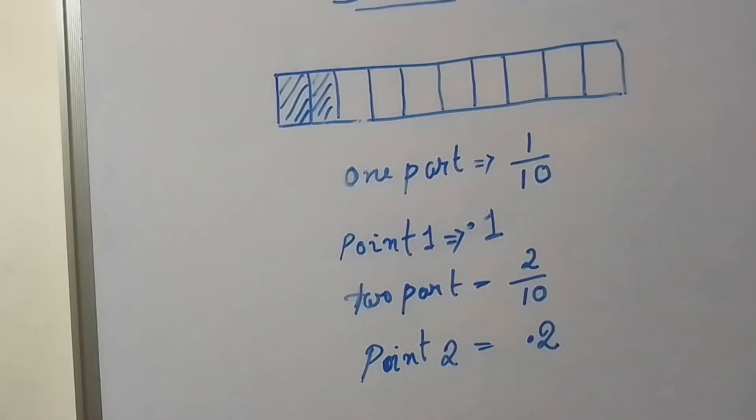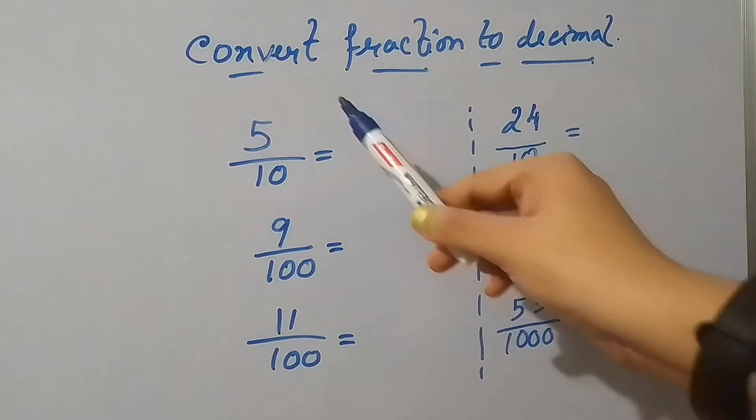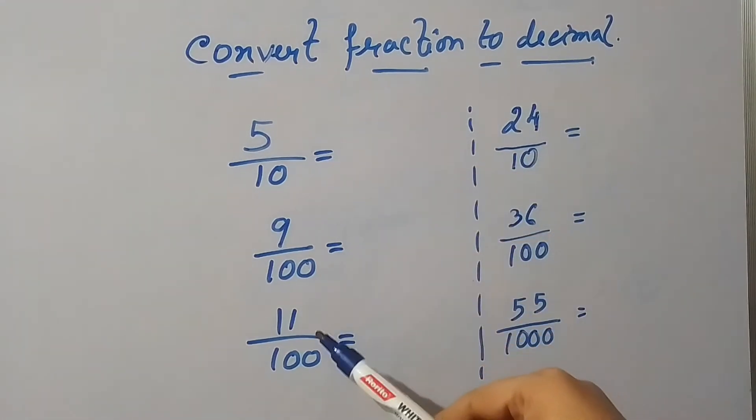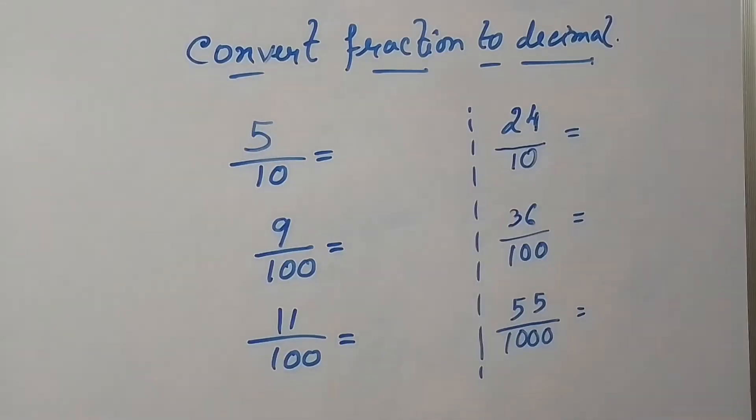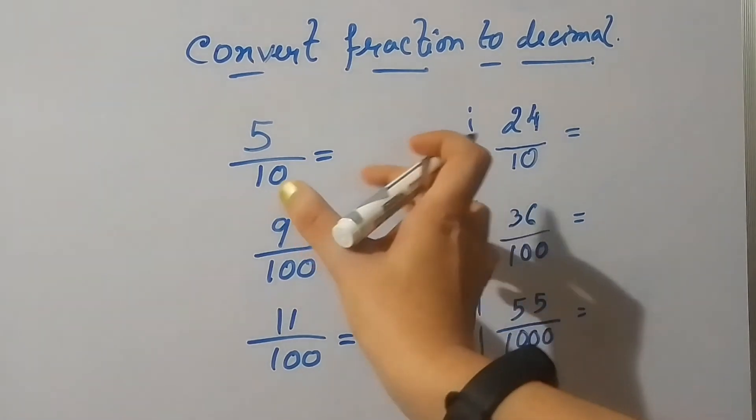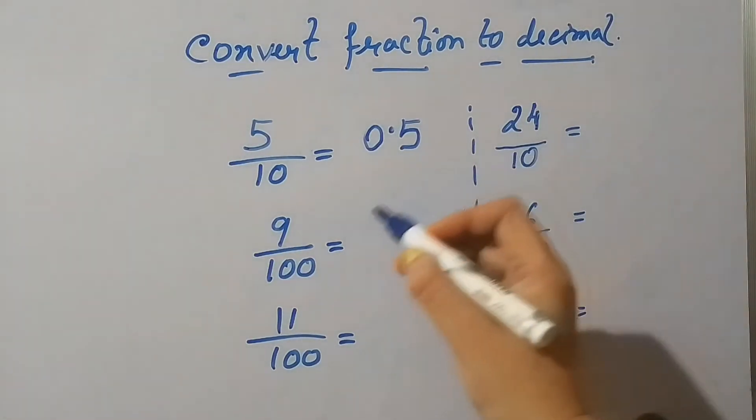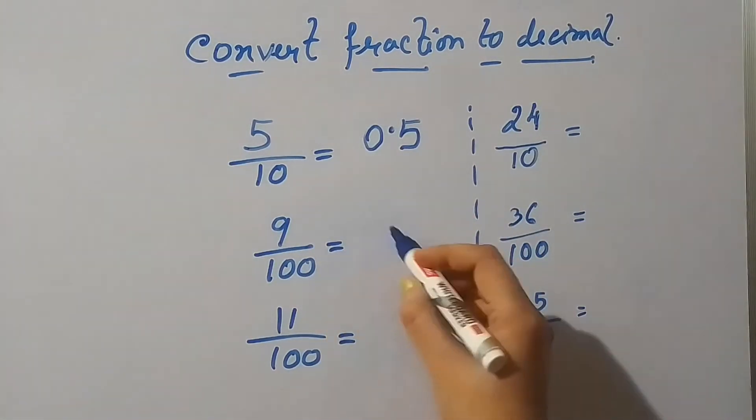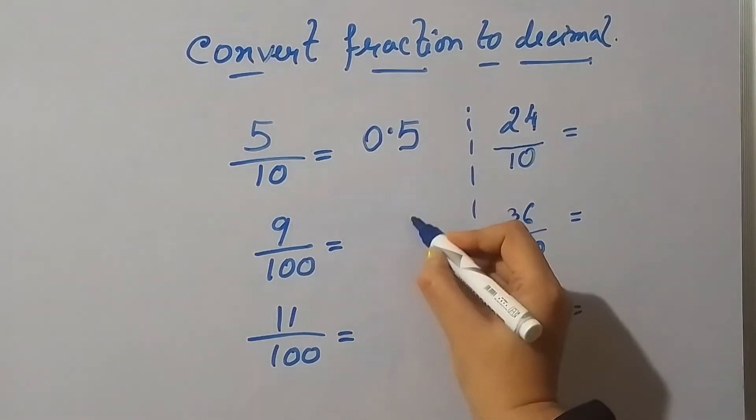This is how we have to convert fraction to decimal. Next we are going to discuss how to convert fraction to decimal. Here I have taken some fractions and we are going to convert them into decimal form. The first one you already know, it will be point 5, and I added an additional zero because the decimal can't sit alone first. Next fraction is 9 by 100.